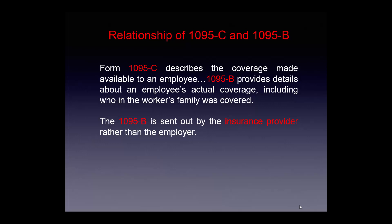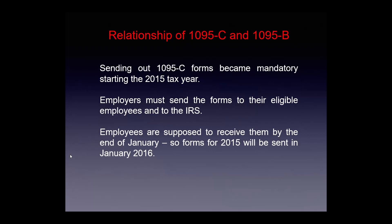The 1095-C describes the coverage made available to an employee, while the 1095-B provides details about an employee's actual coverage, including who in the worker's family was covered. The 1095-B is sent out by the insurance provider rather than the employer. Sending out 1095-C forms became mandatory starting with the 2015 tax year; employers must send the forms to eligible employees and to the IRS. Employees are supposed to receive them by the end of January, so forms for 2015 will be sent in January 2016.